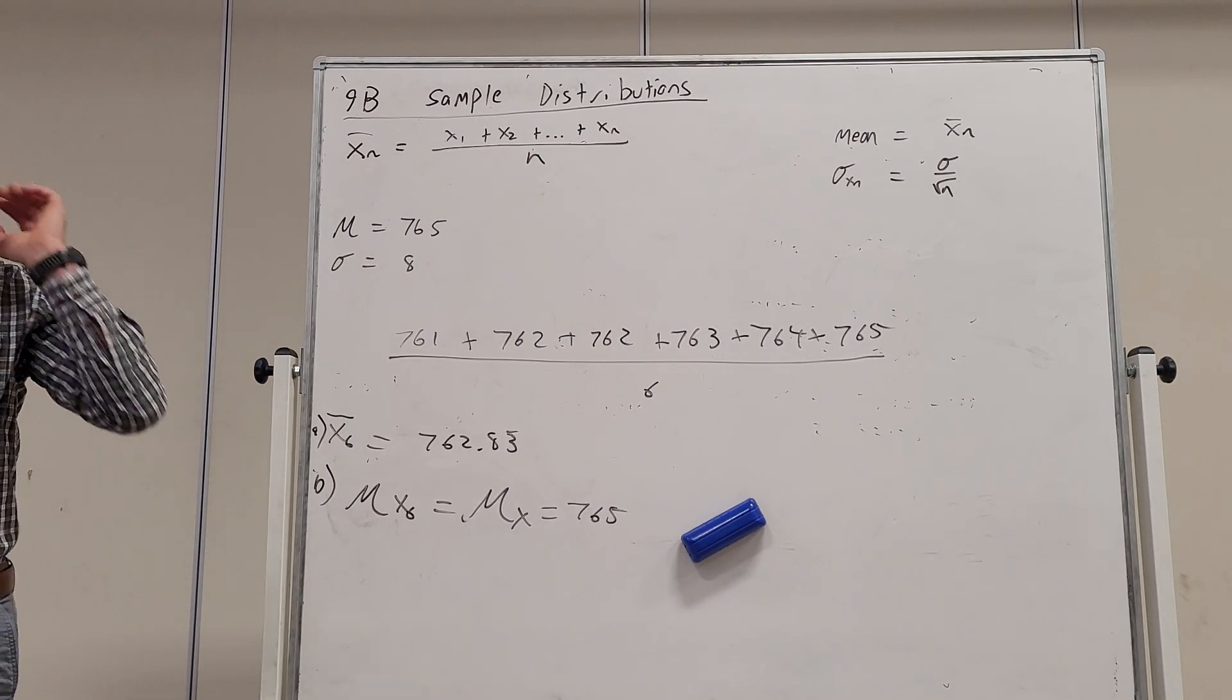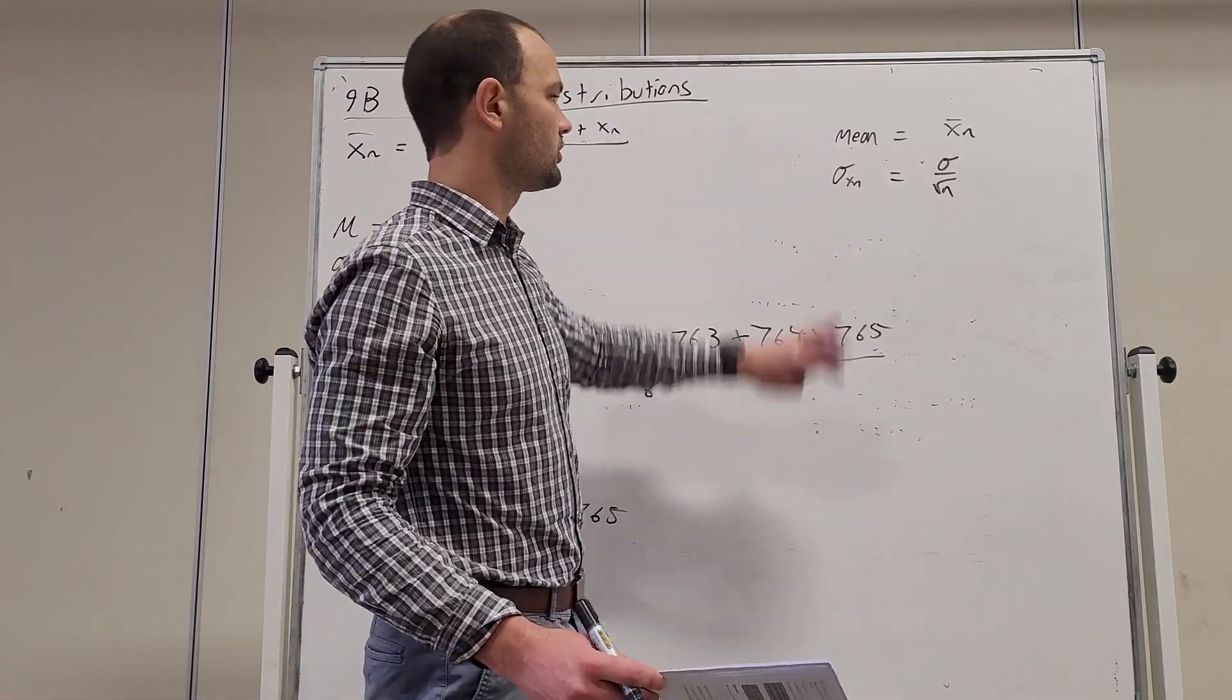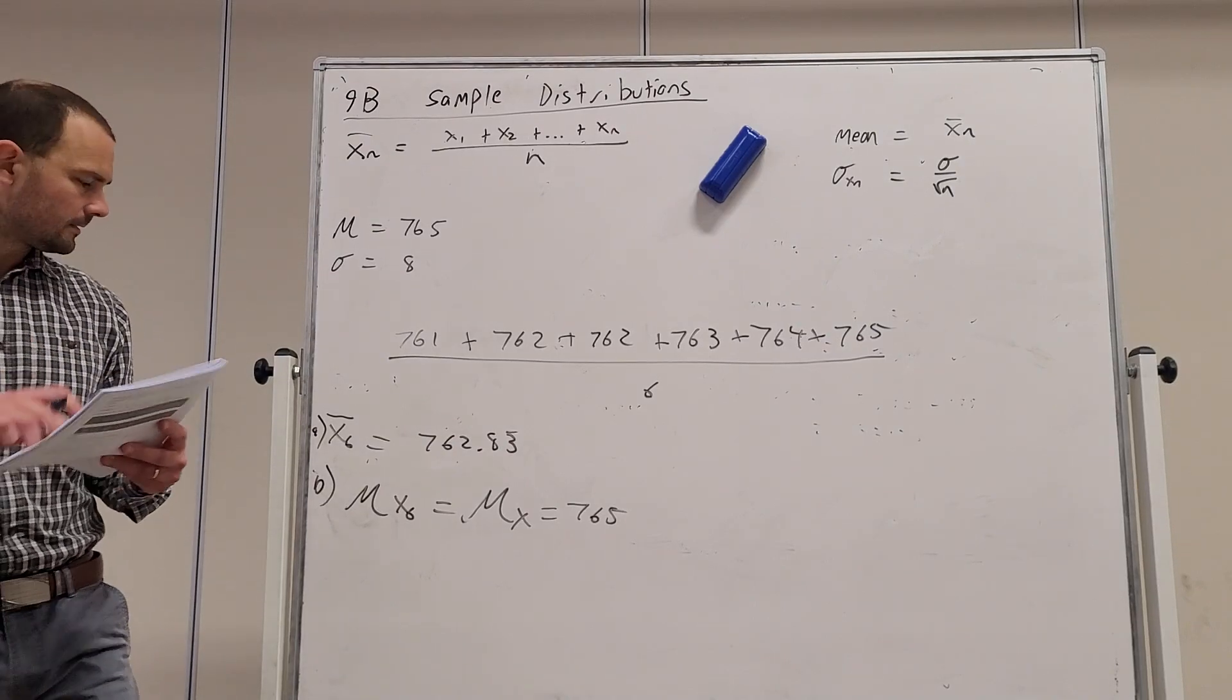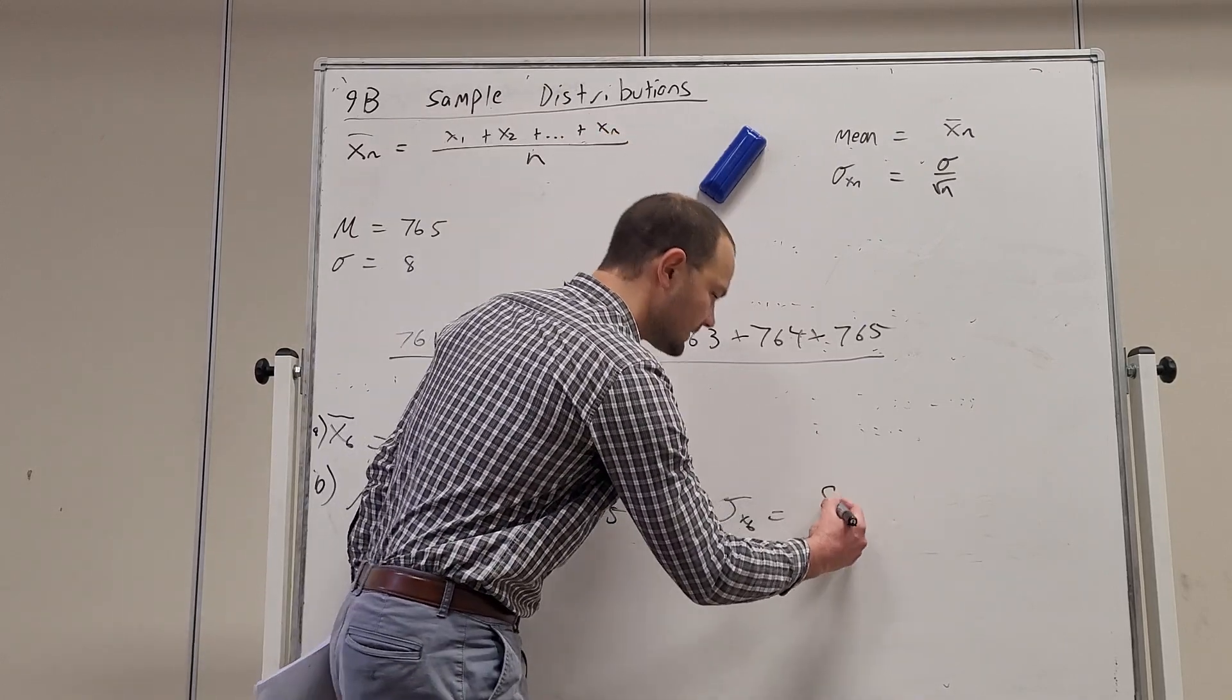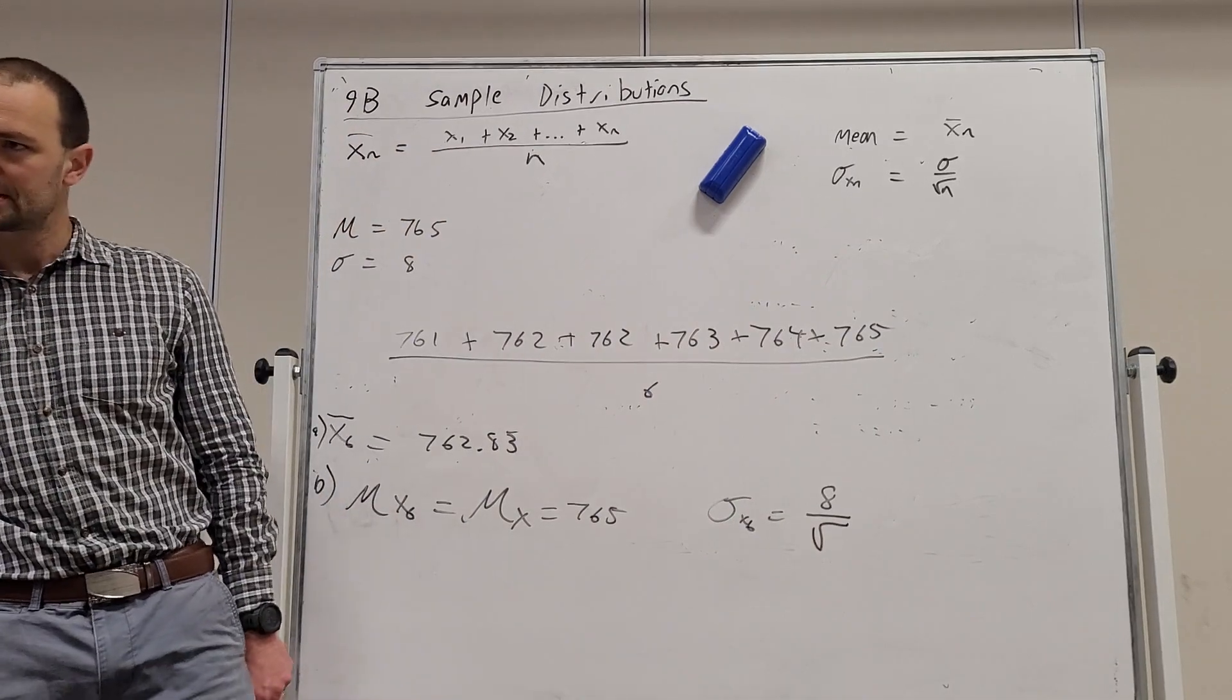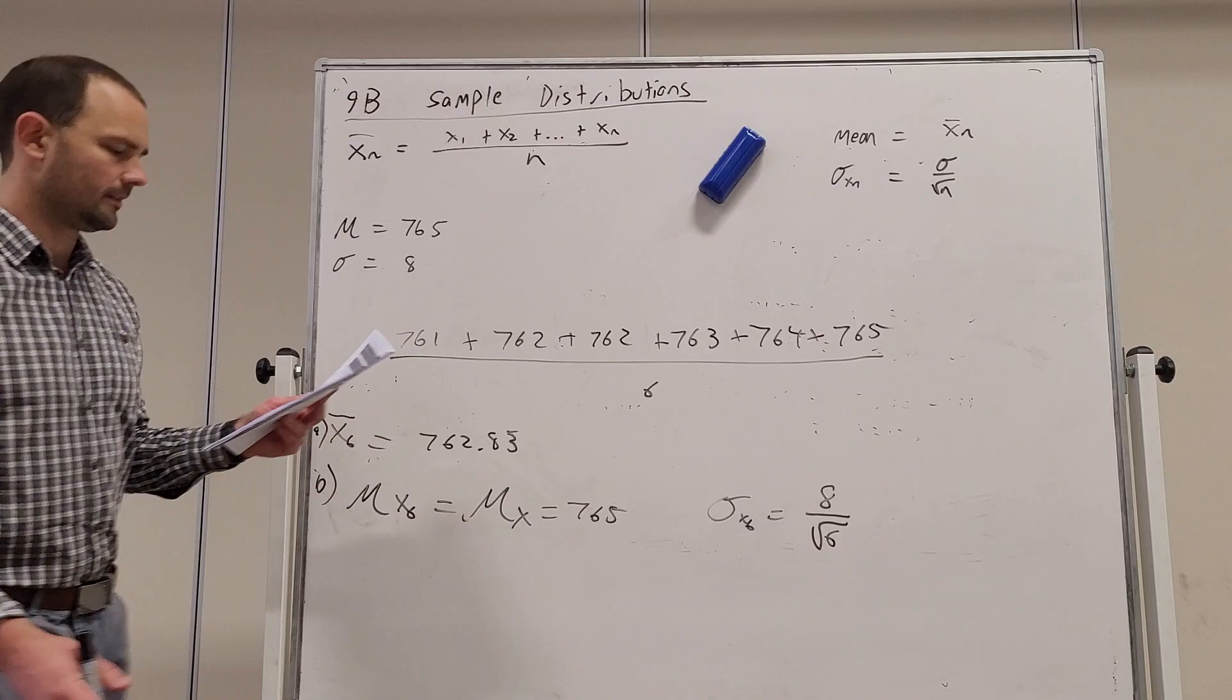And the standard deviation is this formula here. Standard deviation divided by the square root of n. So our standard deviation is 8. So the standard deviation of x6 is going to be 8 divided by the square root of n. How many observations have we performed? 6. And we can just leave it like that.